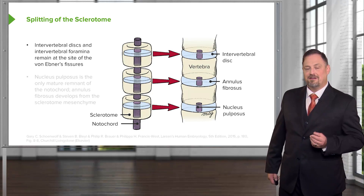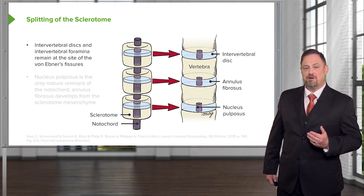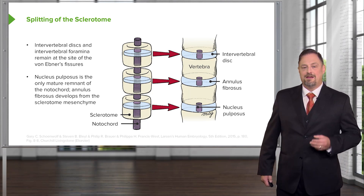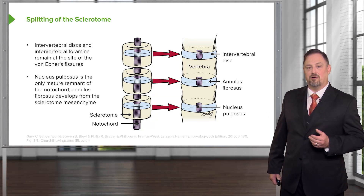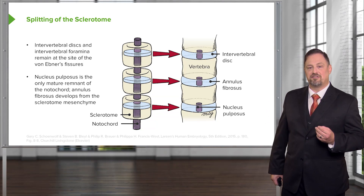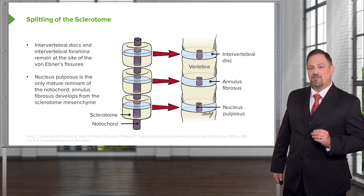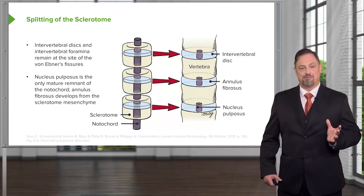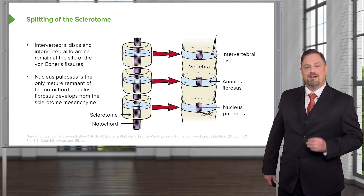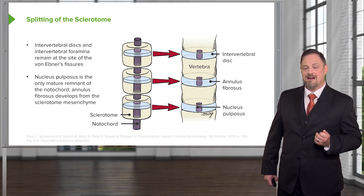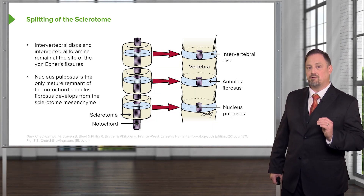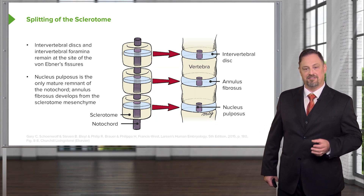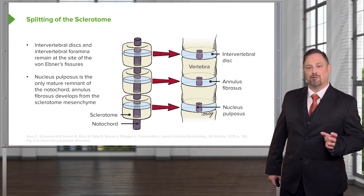The portion that remains in between adjacent vertebrae is going to develop into the intervertebral discs. At the core of each intervertebral disc is a region called the nucleus pulposus, which is a shock absorber for our body and allows our vertebrae to compress and relax without too much trauma. It's the only remnant we have of the notochord — even though the notochord was ridiculously important during development, in the adult the only remnant of it is the nucleus pulposus.